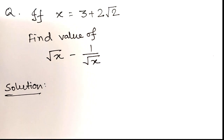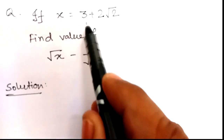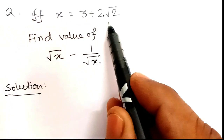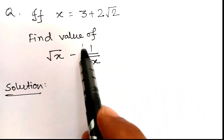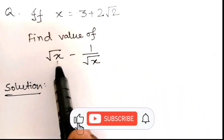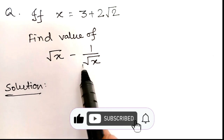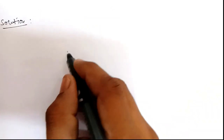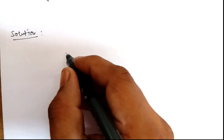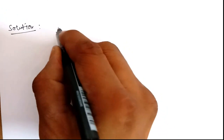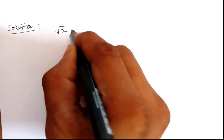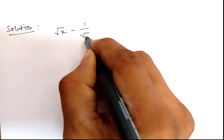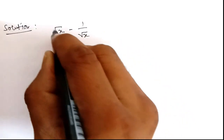Welcome to today's maths class. Our today's problem is: if x equals 3 plus 2 root 2, then find the value of root over x minus 1 divided by root over x. To get the solution, the first thing we will do is make a whole square of the expression whose value is required.